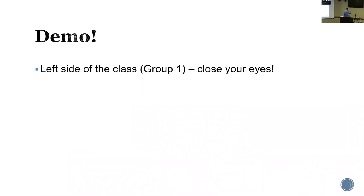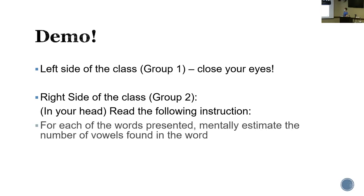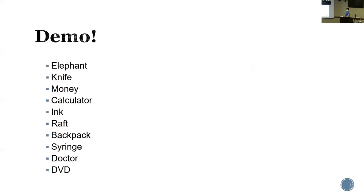Now I'm going to show you a demonstration. For the left side of the class, you guys will be group one — close your eyes. For group two, the right side of the class, read the following instructions in your head, don't read it out loud. Once you get the instruction, give me a thumbs up. Online students, you can assign yourself to either group one or group two based on your preferences.